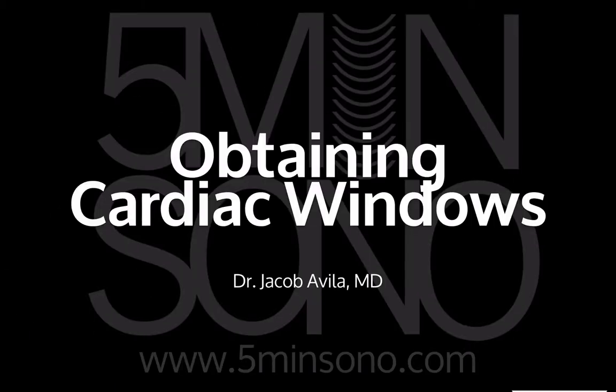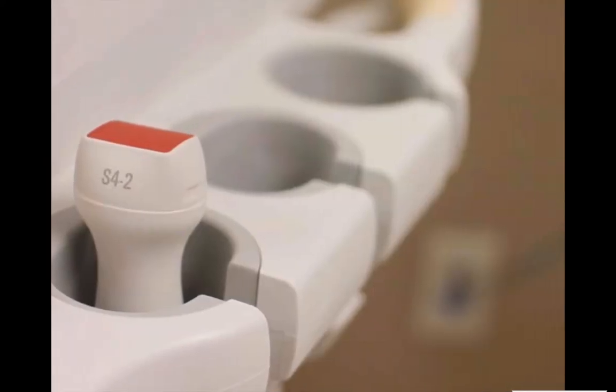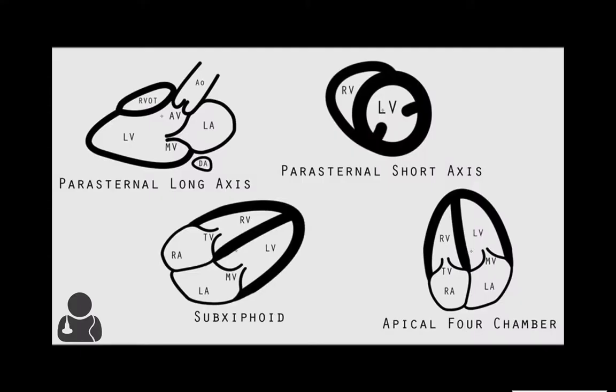Hello, this is Jacob Avila of 5-Minute Sono, and today we're going to talk about something I get asked about a lot: how do you get that perfect cardiac window. The probe you're going to want to use is the phased array transducer, also called the cardiac transducer. There are four main views: the parasternal long and short axis, the subxiphoid, and the apical four-chamber.